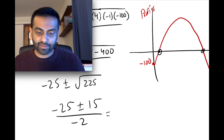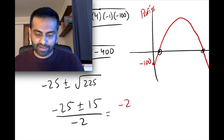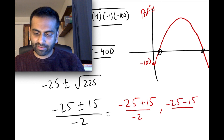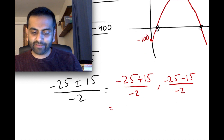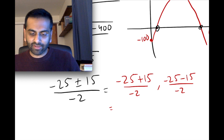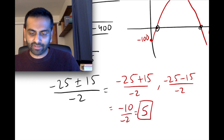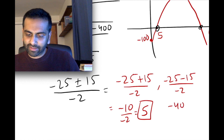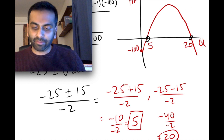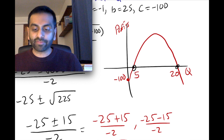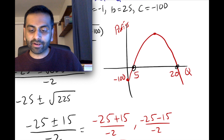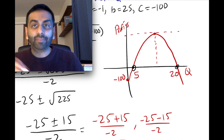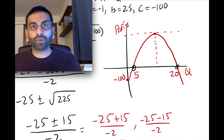That gives us two solutions: negative 25 plus 15 over negative 2 equals negative 10 over negative 2, which is positive 5; and negative 25 minus 15 over negative 2 equals negative 40 over negative 2, which is positive 20. So the two break-even points are when you're selling 5 units or 20 units — either of those gives you zero profit. There is a way to easily find the vertex using calculus, which is coming up later, but this just shows how useful modeling with parabolas can be for real-world scenarios.